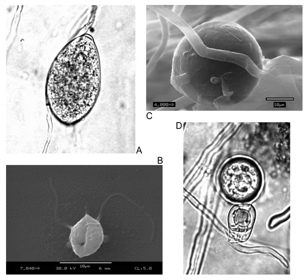The third group are the downy mildews, which are easily identifiable by the appearance of white, brownish, or olive mildew on the leaf undersides, although this group can be confused with the unrelated fungal powdery mildews. The fourth group are the white blister rusts (Albuginales), which cause white blister disease on a variety of flowering plants. White blister rusts sporulate beneath the epidermis of their hosts, causing spore-filled blisters on stems, leaves, and the inflorescence.